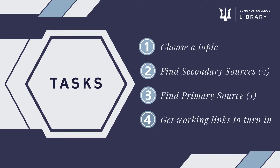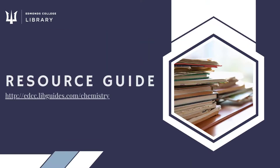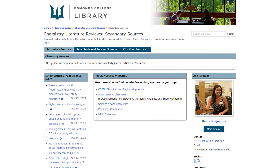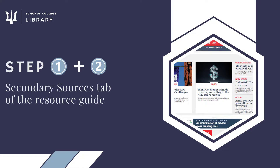Being comfortable with both types of sources will be important to you as a college student, so this is good practice. All of the links you need are available on the resource guide, Chemistry Literature Reviews. We're going to do steps one and two at the same time, using the secondary sources tab of the resource guide.